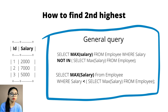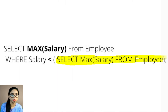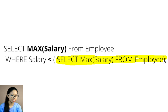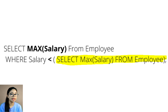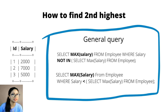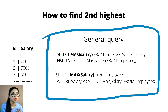Now the second approach: the inner query runs SELECT MAX(salary) FROM employee, which gives 7k. Then the outer query runs SELECT MAX(salary) FROM employee WHERE salary is less than the max salary. What is the max salary less than 7k? That is 5k. So both approaches give you the same result.